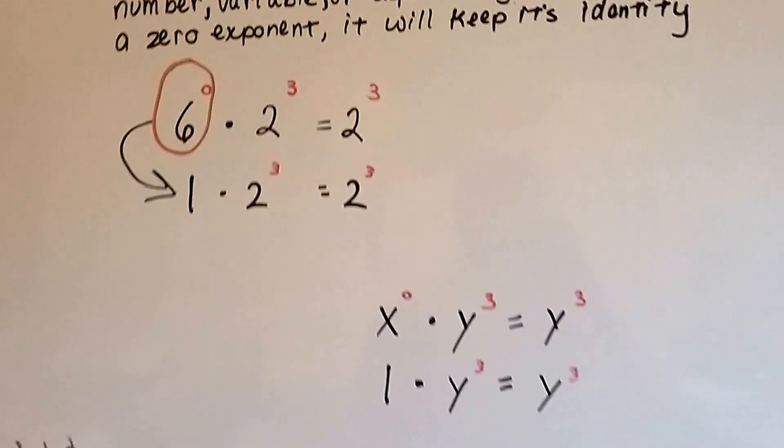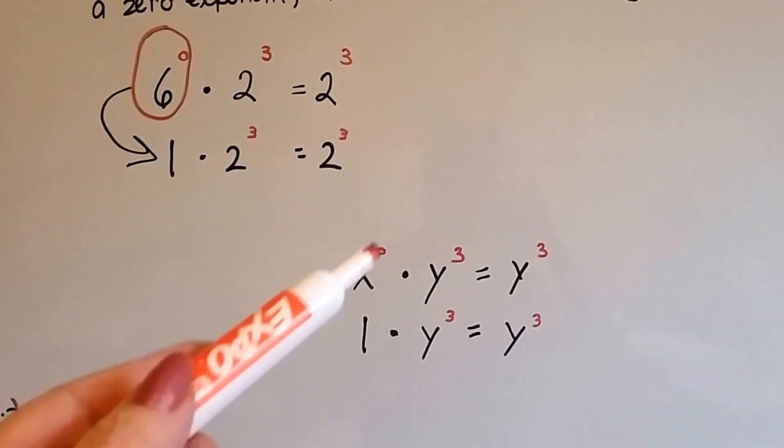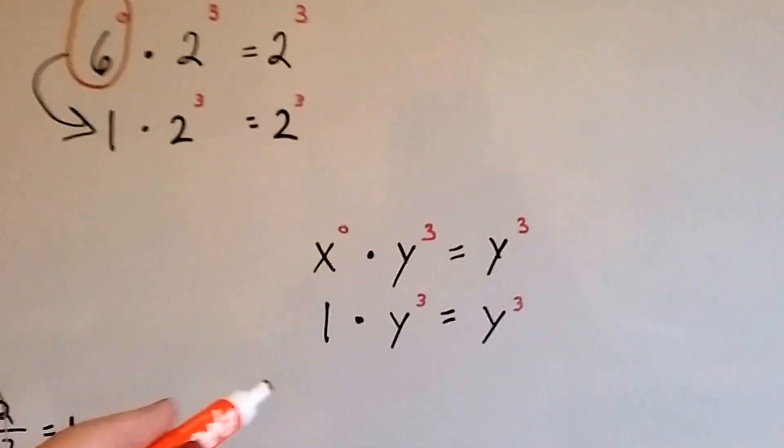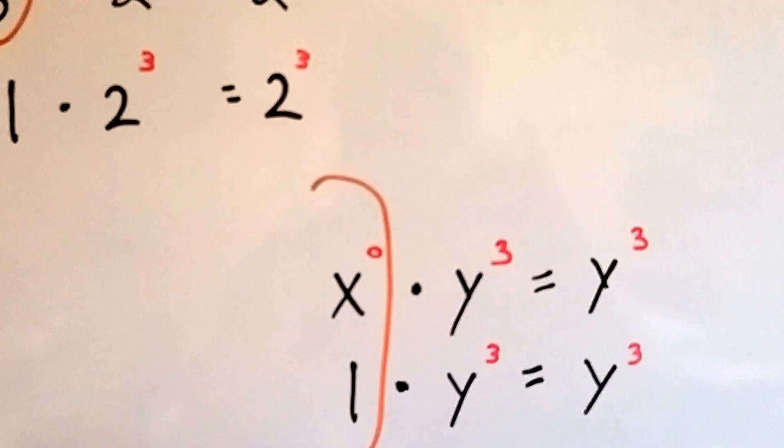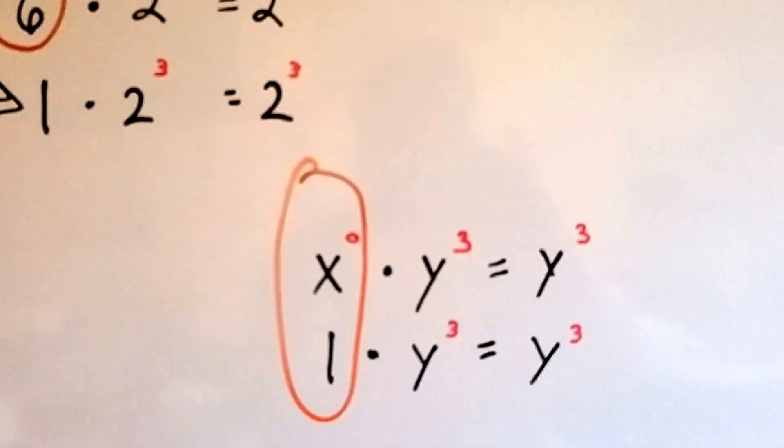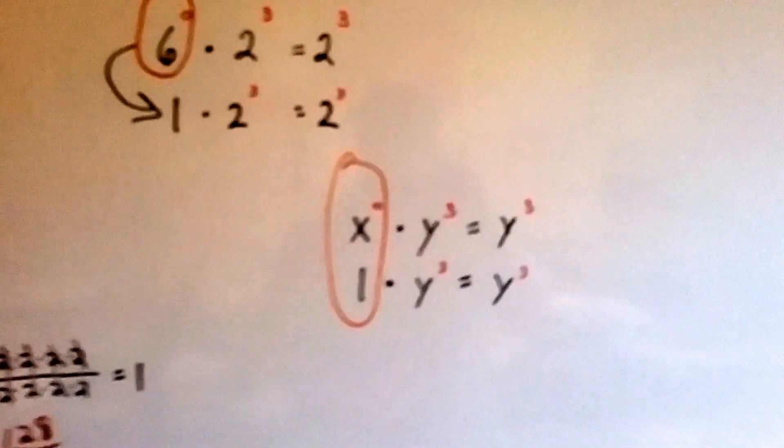If we're going to multiply x to the 0 power times y to the 3rd power, x to the 0 power equals 1. So it's going to stay y to the 3rd power, like identity property.